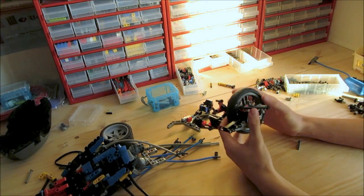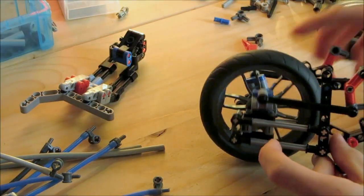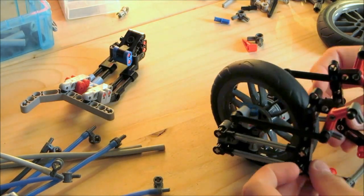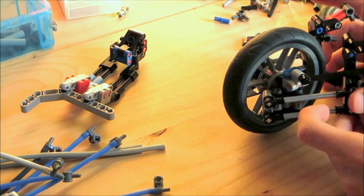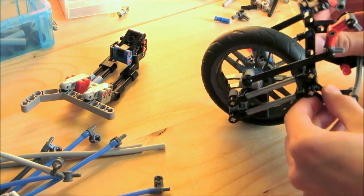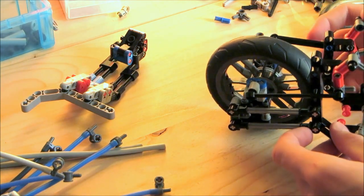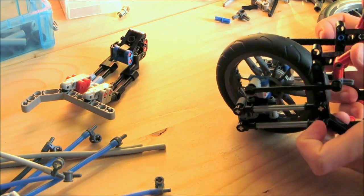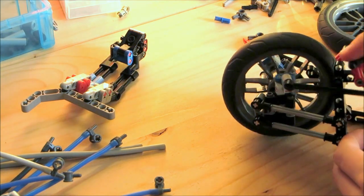My second current project is the hub center steered motorcycle. The black parts are basically the body of the motorcycle and this is the front fork. It allows the suspension system to do like this and it can turn by maneuvering the controls like that.